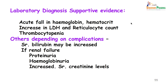Supportive evidence includes an acute fall in hemoglobin or hematocrit, increase in LDH, increase in the reticulocyte count, thrombocytopenia, and depending on complications, increased serum bilirubin. In case of renal failure, there may be proteinuria, hemoglobinuria, and increased serum creatinine levels.